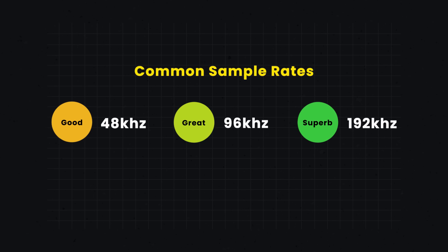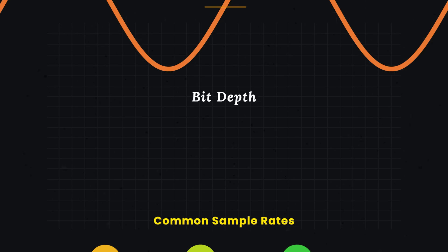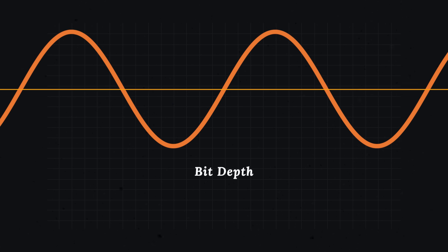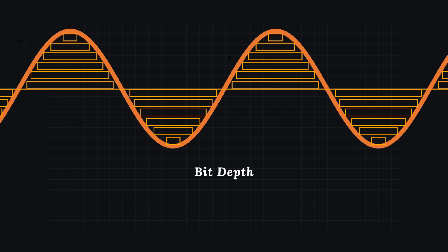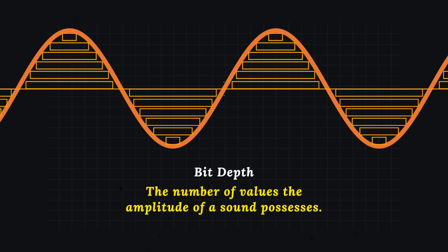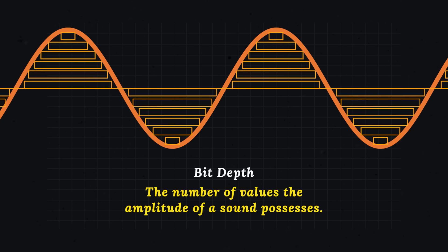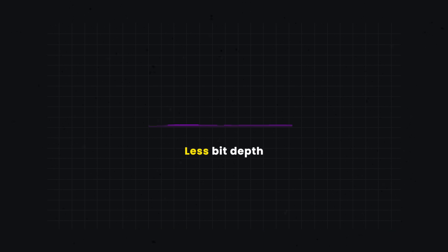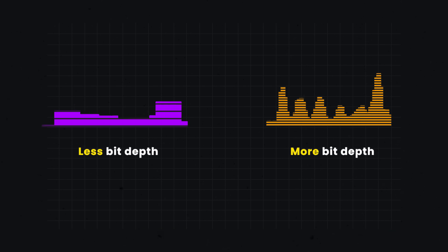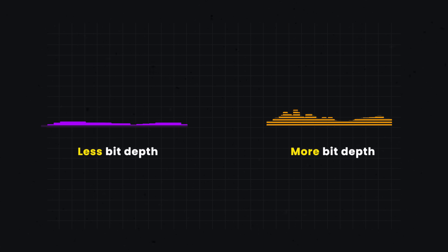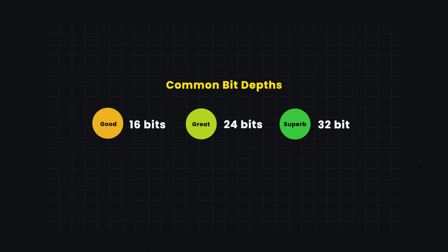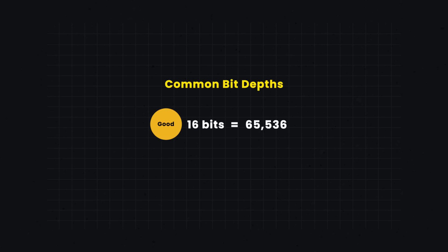Sound mixers must also take bit depth into account. This refers to the number of values an amplitude of a sound possesses. Fewer bits sound thin, while more bits allow for more dynamic range. Typically, a mixer will record with at least 16 bits, which captures 65,536 values.